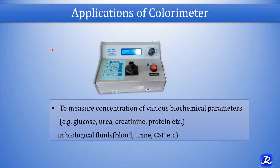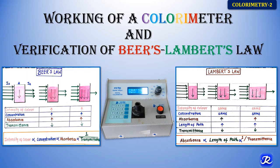Applications of colorimeter: it is used to measure optical density, and by putting those values in the formula we can get the concentration of various biochemical parameters like glucose, urea, creatinine, protein, etc., in biological fluids. Nowadays with advances in science, we have automated biochemistry analyzers where we don't need to use the formula and calculate ODs manually — we directly get results. But the principle of colorimetry remains the same, and the same principle is used in spectrophotometers and other automated biochemistry analyzers as well. That is why understanding the basic principle of colorimetry is very important.